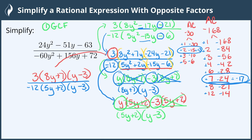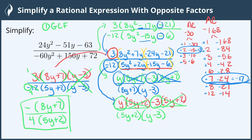Now that everything is factored, we cancel all common factors. (y minus 3) divided by (y minus 3) cancels. Both 3 and 12 can be divided by 3, giving us 1 and negative 4. The negative can go on the numerator, making it negative 1 times (8y plus 7), which we write as just negative (8y plus 7). In the denominator we have 4 times (5y plus 2). We have now simplified the rational expression all the way down to this much smaller expression, and we're done.